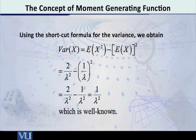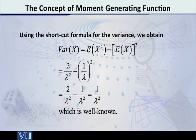Now plugging into the shortcut formula: variance of x equals (2 over lambda squared) minus (1 over lambda) squared, which equals 1 over lambda squared. And students, this too is a well-known result — the variance of the exponential distribution given by f of x equal to lambda e raised to minus lambda x is equal to 1 over lambda squared.